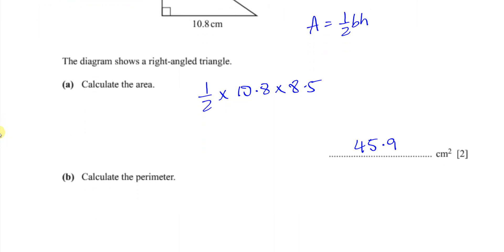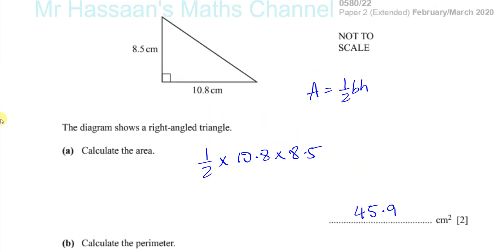Now, part B says calculate the perimeter. Now, the perimeter of a triangle or of any shape is the length of the outline. So for us to find the perimeter, we need to find this side, which I'm going to call X. Okay, so in order to find X.